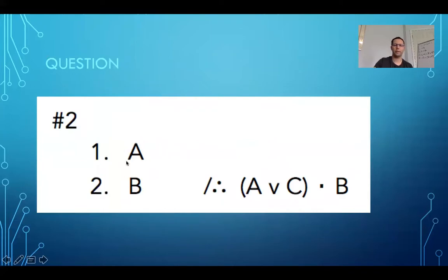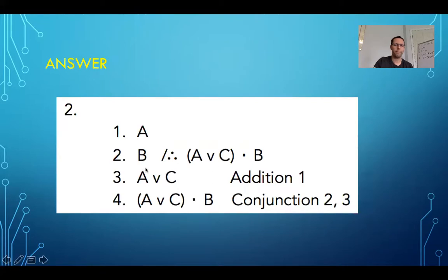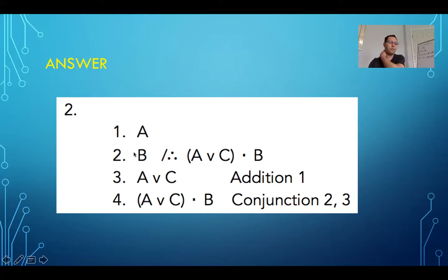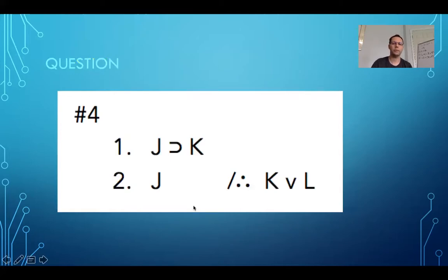For free I get: A is true and B is true. I'm trying to prove that A or C and B is true. I can make an A or C statement for free, because I can add anything to a statement with an or — that's called addition. So A or C is true, and I already know that B is true — I had that for free. So by conjunction, if I have them both, I can say A or C and B.